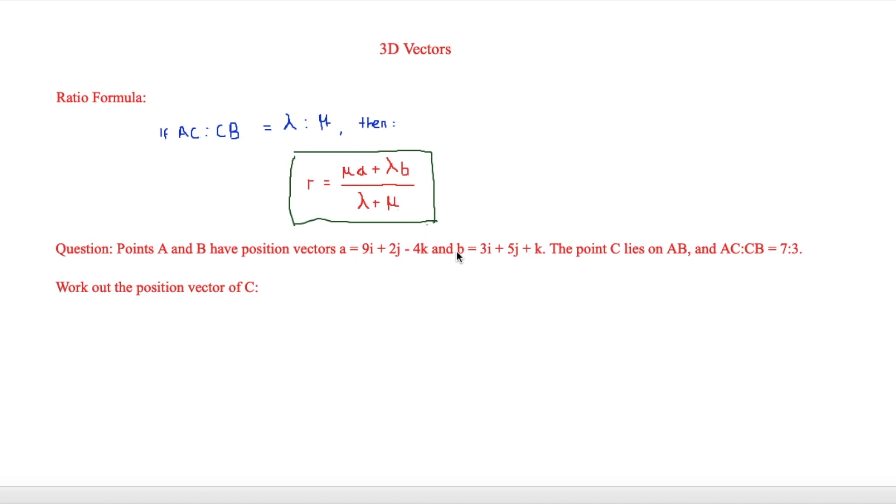So the final thing to look at in relation to 3D vectors is the ratio formula. And the ratio formula says that if AC to CB is the same ratio as lambda to mu, and again those Greek alphabet letters can be changed, then r is equal to mu times a plus lambda times b over mu plus lambda. So this will make more sense when we look at a question. And the question says that points A and B have position vectors a equals 9i plus 2j minus 4k, and b equals 3i plus 5j plus k. And then the point c lies on AB, and AC to CB has the ratio 7 to 3. So work out the position vector of c.